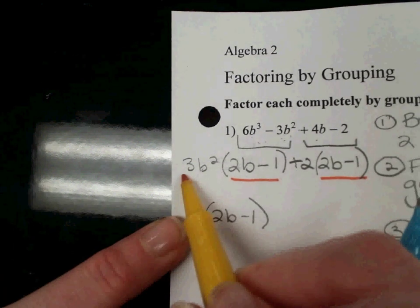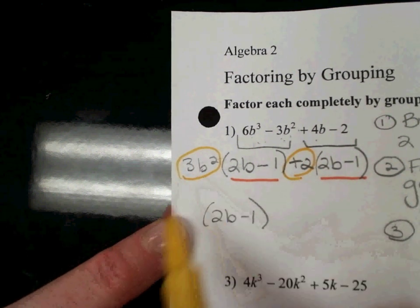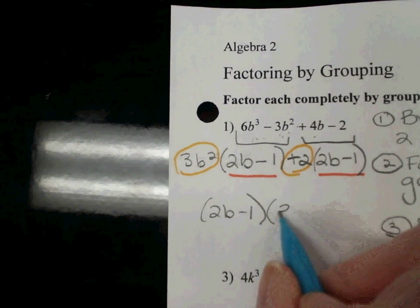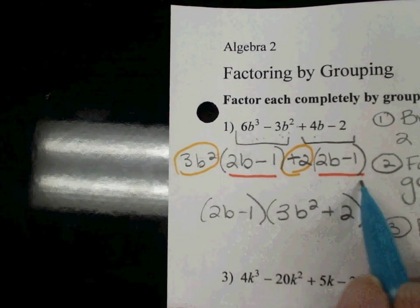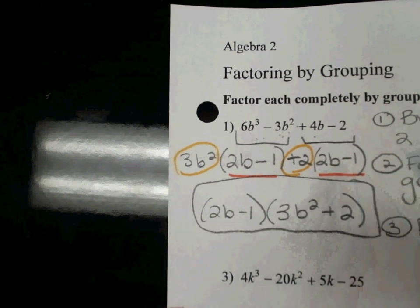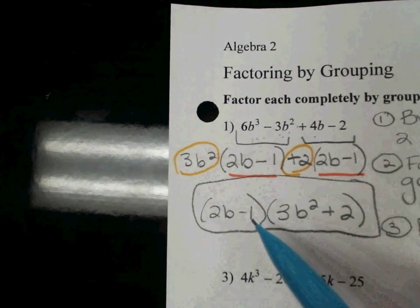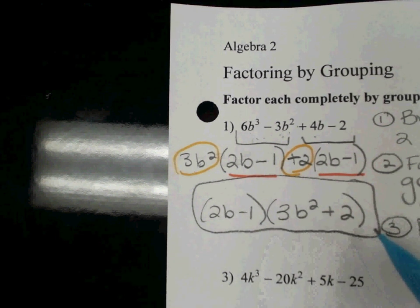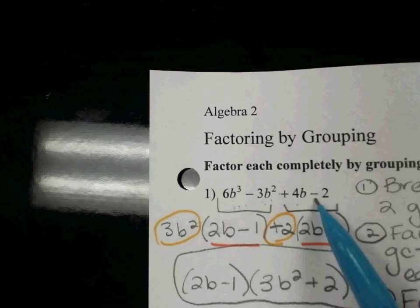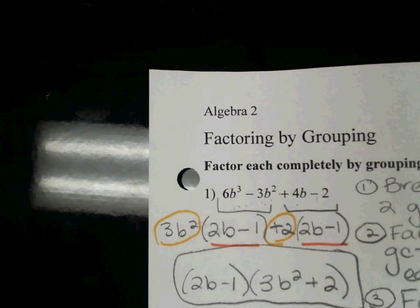And then the other group is going to be my leftovers, the 3b² plus 2. So this is my final answer. If I FOILed this, multiplied it out and simplified, I would wind up back here. So I'm doing the opposite of FOILing, I'm factoring.